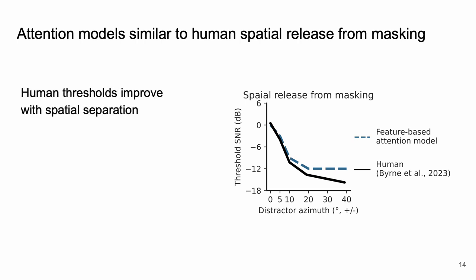The human thresholds are known to improve with spatial separation and particularly have a large benefit with just a small separation in azimuth about 10 degrees. Looking at our model we see the trend is overall quite similar in terms of its dynamic range and shape of the tuning curve, but we see a very comparable benefit with the same small step size of 10 degrees.